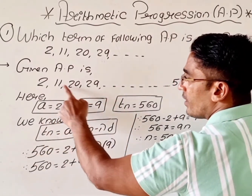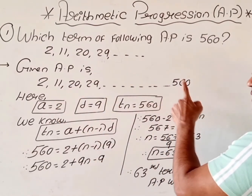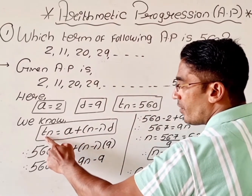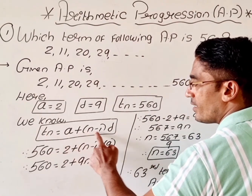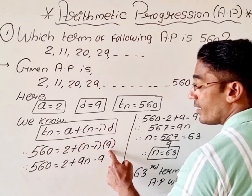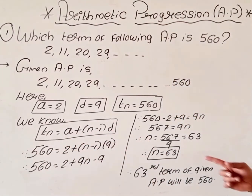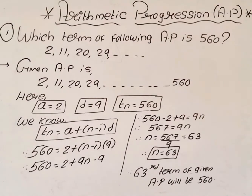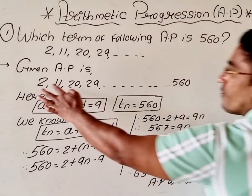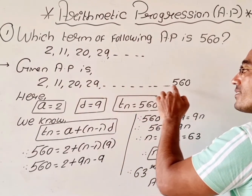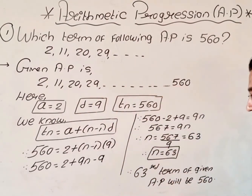D is the common difference: 20 minus 11 equals 9. I took 560 as T(N). I applied the formula T(N) = A + (N−1) × D. I knew the values of T(N), A, and D. I simplified and got the value of N. The value of N will always be a natural number. In this case N is 63, so my 63rd term will be 560.